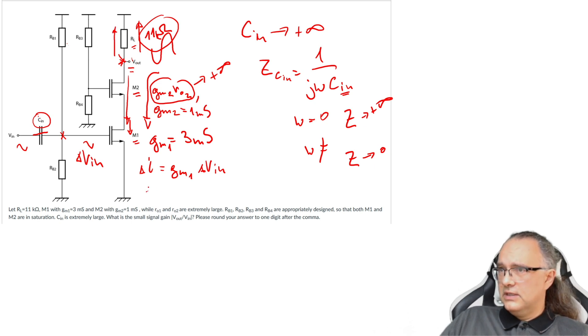Which means that the voltage that I will have at the output, with taking into account the inversion of common source amplifier, will be minus then the current ΔI times R equivalent at the output, which is R load, which will be then minus GM1·R load·Vin.